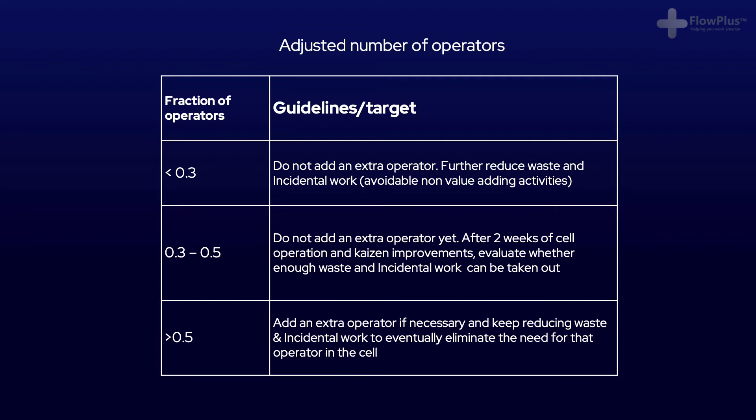The reason for this is we really want to avoid having an operator who is busy for less than 30% of the time and waiting for the rest. If the decimal is between 0.3 and 0.5, then we will typically not add an operator to start with, and after a set time interval, say two weeks of improvements, we can then reassess, but hopefully by that time we will have eliminated that amount of non-value add time.